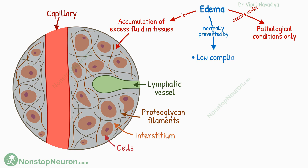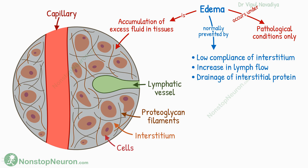The first factor is low compliance of the interstitium at the negative pressure range. The second is an increase in lymph flow. And the third is drainage of proteins from the interstitium. Now let's see the role of each one in more detail.